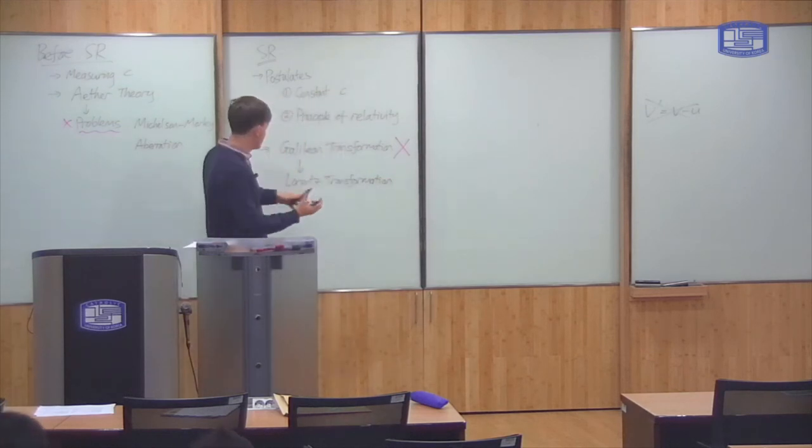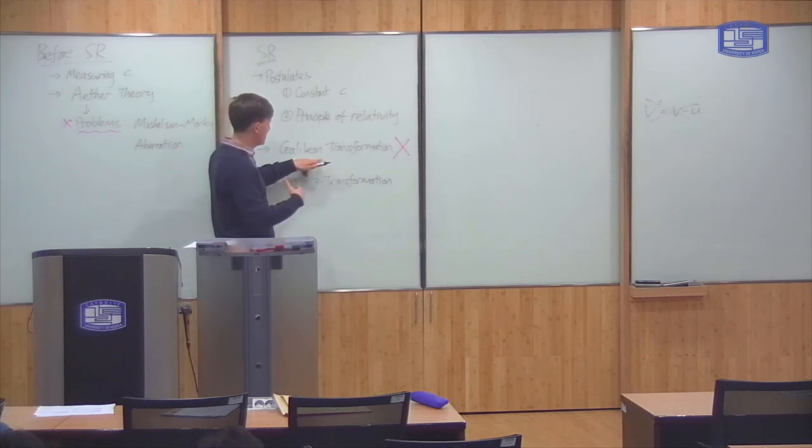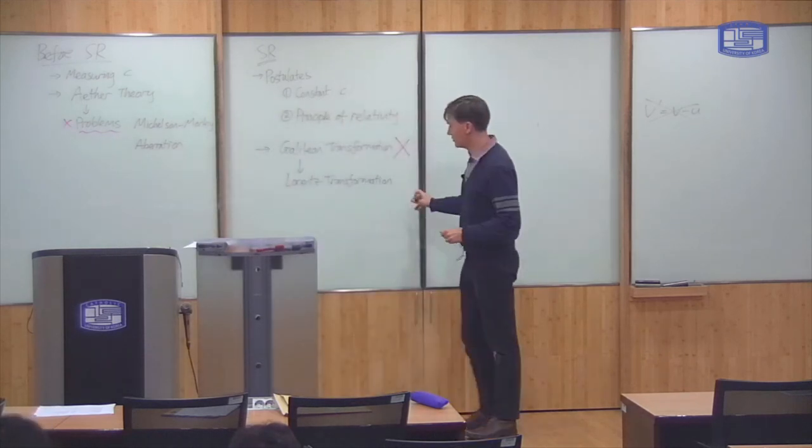And we found the correct transformation was the Lorentz transformation, which, at small velocities, is approximately the same as the Galilean transformation. Which it should be because we know at small velocities, much less than the speed of light, Newtonian physics is basically right.